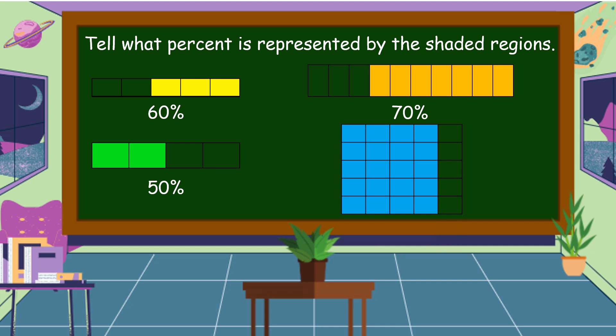For the last figure, it is divided into 25 equal regions. So 100 percent divided by 25 is equal to 4 percent. There are 20 shaded regions. What percent is the shaded regions? Very good. The answer is 80 percent.